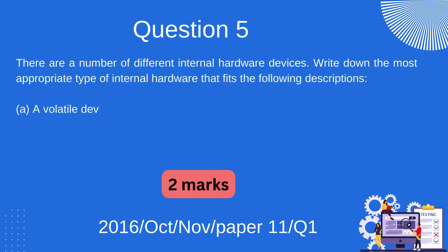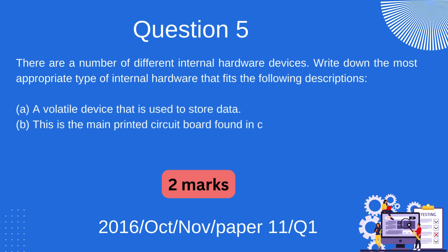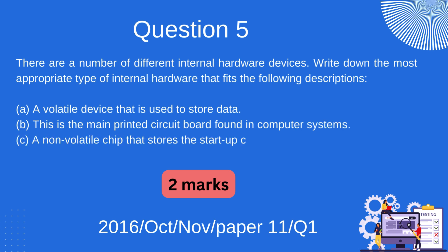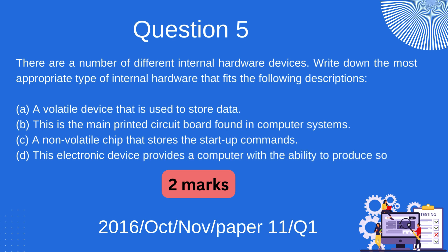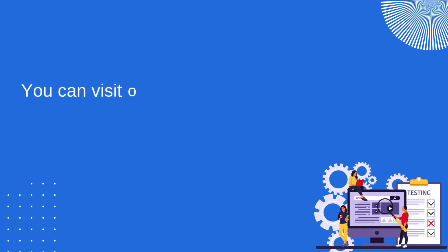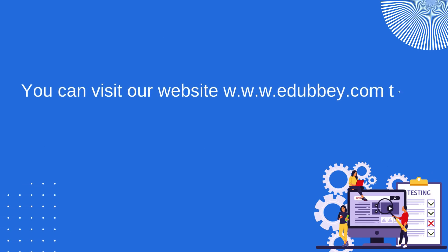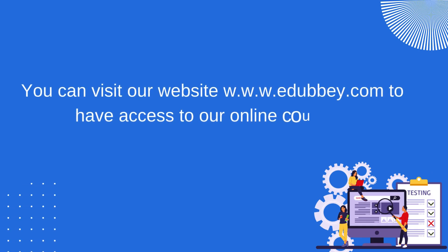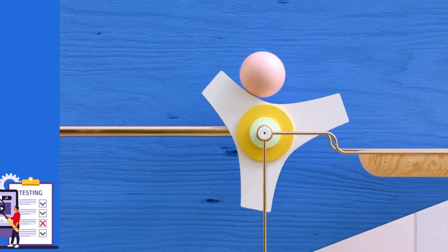A: a volatile device that is used to store data. B: this is the main printed circuit board found in computer systems. C: a non-volatile chip that stores the startup commands. D: this electronic device provides a computer with the ability to produce sounds. You can visit our website www.edubay.com to have access to our online courses.